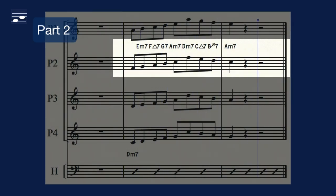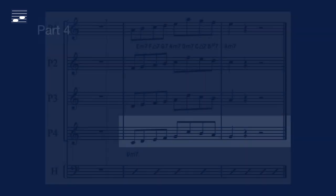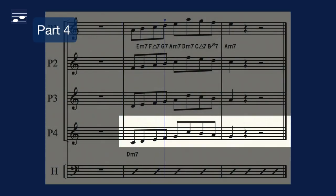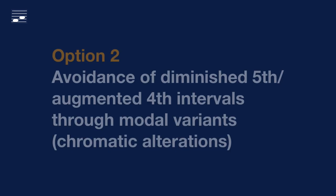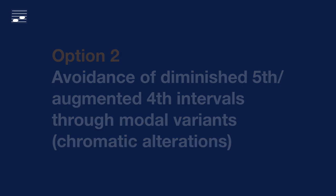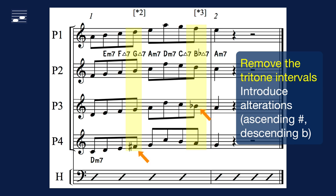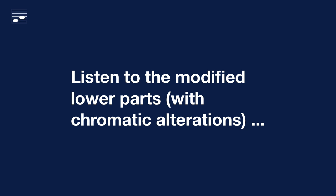By introducing modal variants, using chromatic alterations that eliminate the tritone intervals — use sharps when in ascending motion, use flats when in descending motion — this yields modified parts 3 and 4.